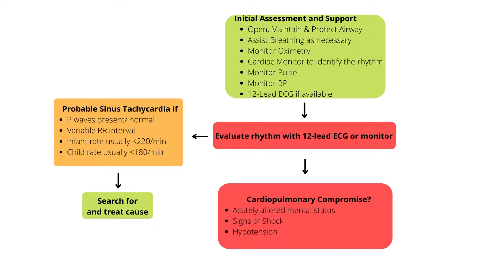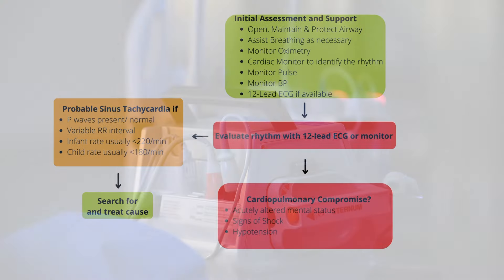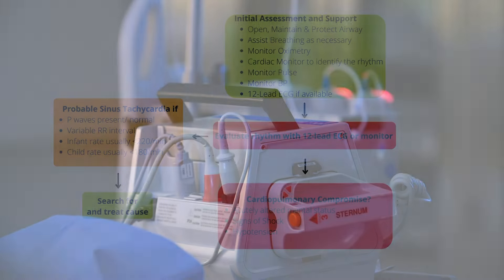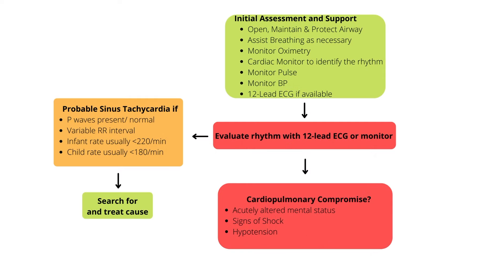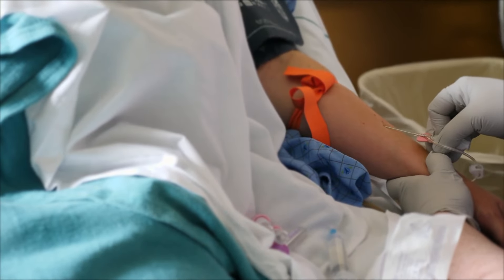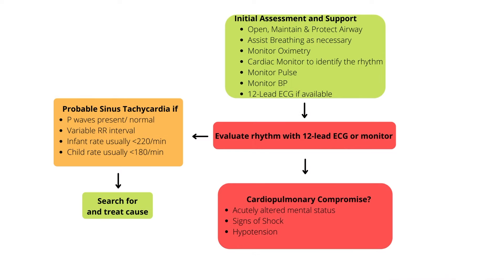Check heart rate and blood pressure. Attach an ECG monitor or defibrillator. Establish vascular access using an IV or IO and obtain appropriate laboratory studies like potassium, glucose, ionized calcium, magnesium, blood gas, and a toxicological screen. Assess neurological status. Anticipate the need for medications depending on the type of rhythm disturbance.